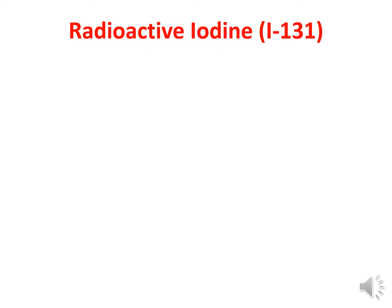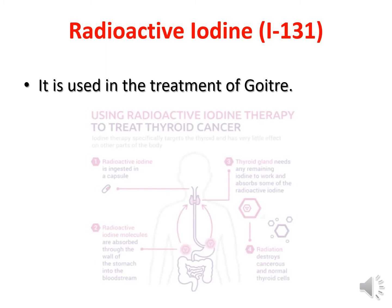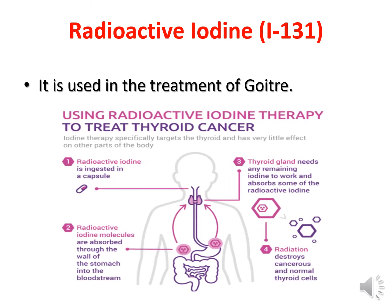Another radioactive element is iodine, which is used in the treatment of goiter. As we know, deficiency of iodine causes goiter. Goiter is a deficiency disease caused because of insufficient iodine. Iodine is a mineral, and if this mineral is less in our body, we suffer from goiter. This can be treated using radioactive iodine.